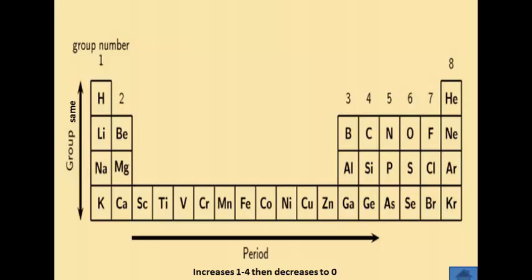Step 2: Calculate the valency using the total number of electrons in the outermost shell. The valency of an atom equals the number of electrons in the outermost shell if that number is 4 or less; otherwise, valency equals 8 minus the number of electrons in the outermost shell. Since the number of electrons in each shell follows a regular pattern, knowing the total electron count allows you to calculate the valency.